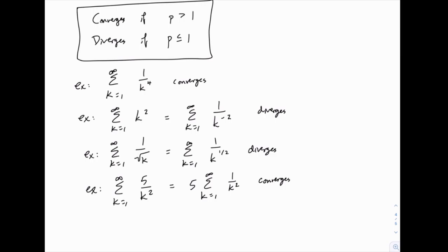Even if we don't know what it converges to, we can check that it converges. So there are plenty of things that don't initially fit the form exactly 1 over k to the p, but with a little bit of work, you can rewrite them in that form and use the p-series to verify whether it converges or diverges.